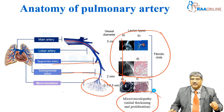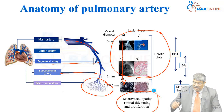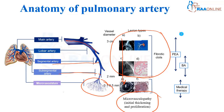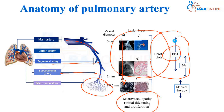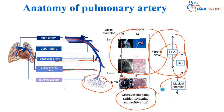Micro vasculopathy will be in the micro circulation, where you will have intimal thickening and proliferation. Any intervention you do can be performed up to the subsegmental artery. In the larger artery, you go for pulmonary thromboembolectomy. In the lobar and segmental arteries, you go for balloon angioplasty to remove the clots. In case of micro circulation, you go with medical therapy.